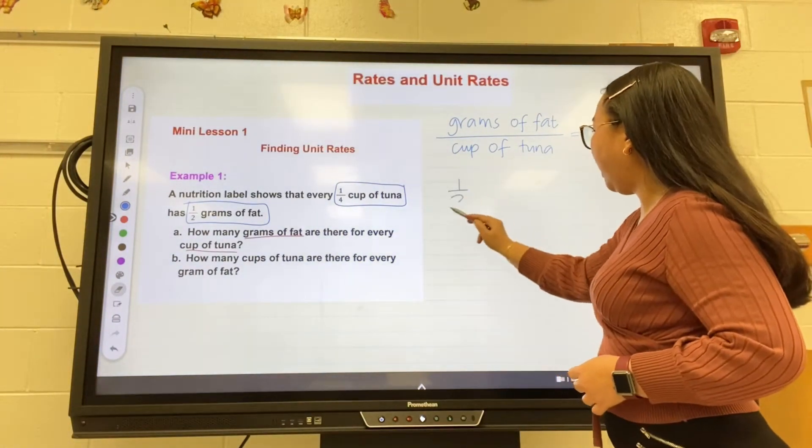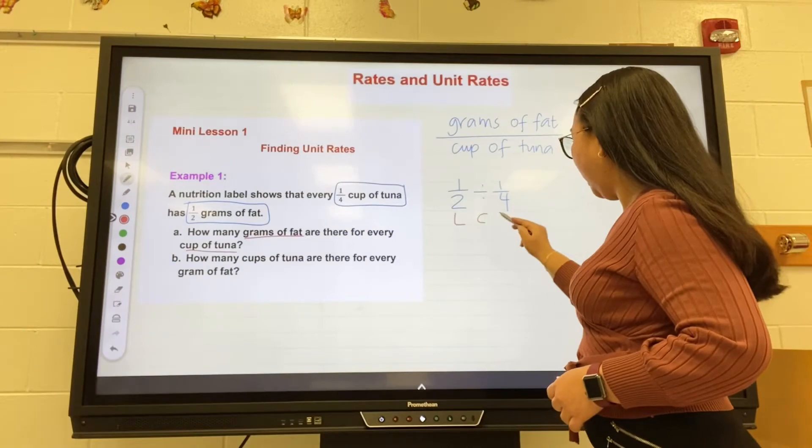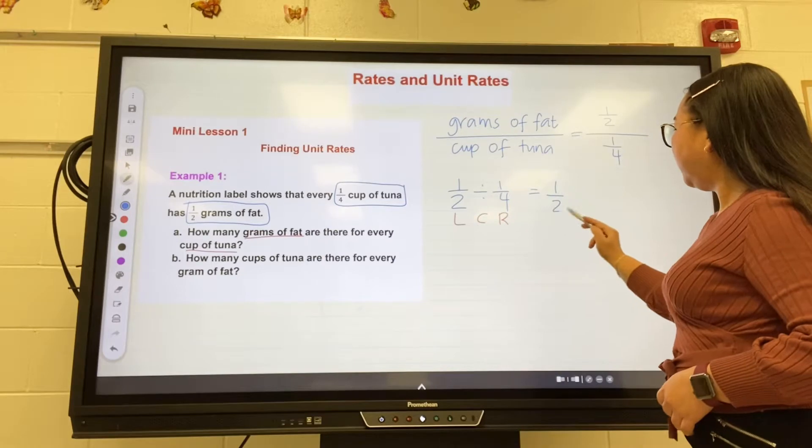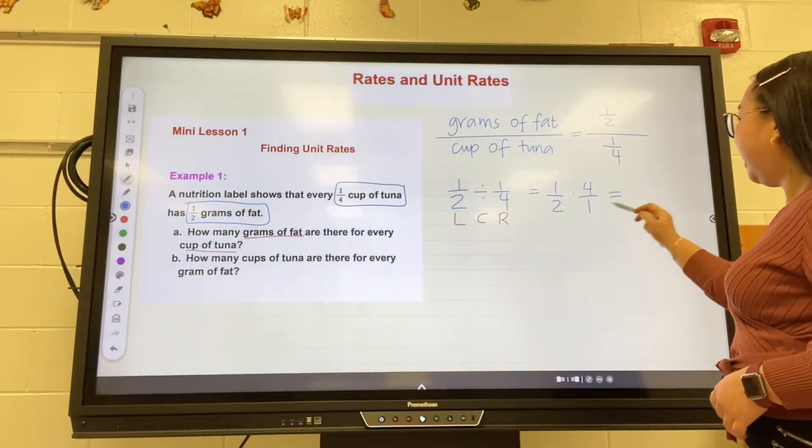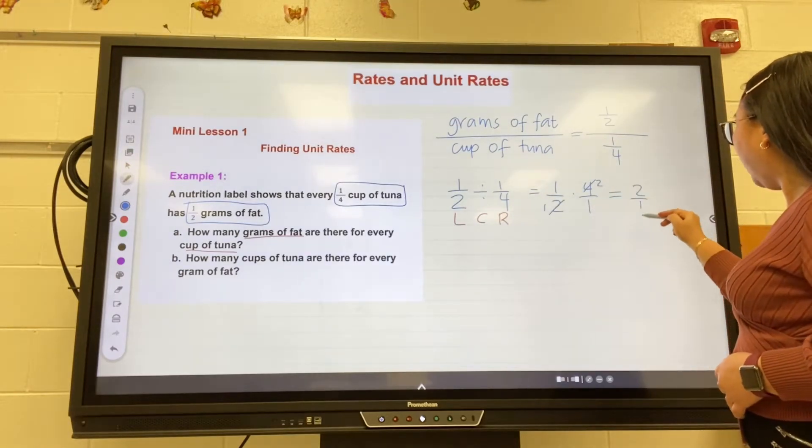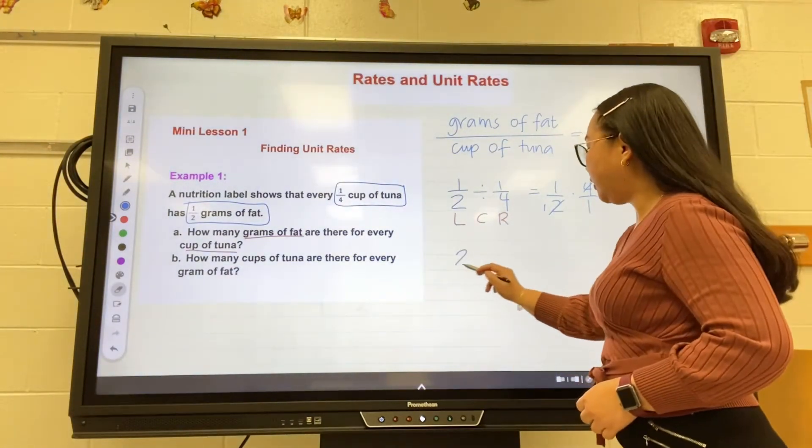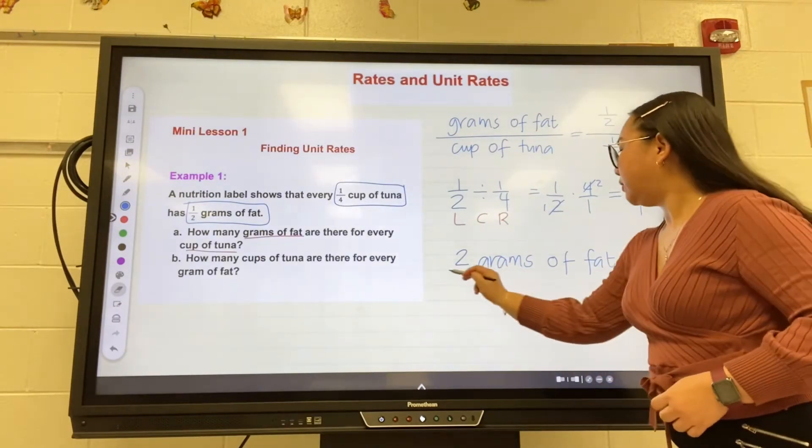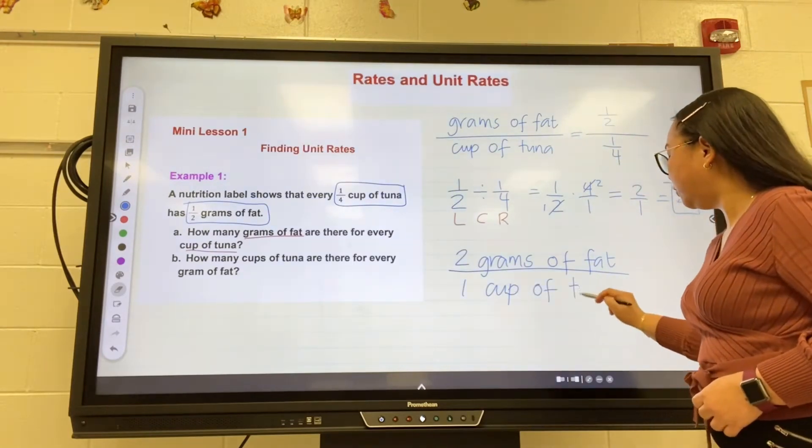Then do keep, change, flip - so this will turn into one-half times the reciprocal of one-fourth, which is four over one. Then we can cancel out four and two, which is two over one, which equals two. This means there are two grams of fat to every cup, or one cup, of tuna.